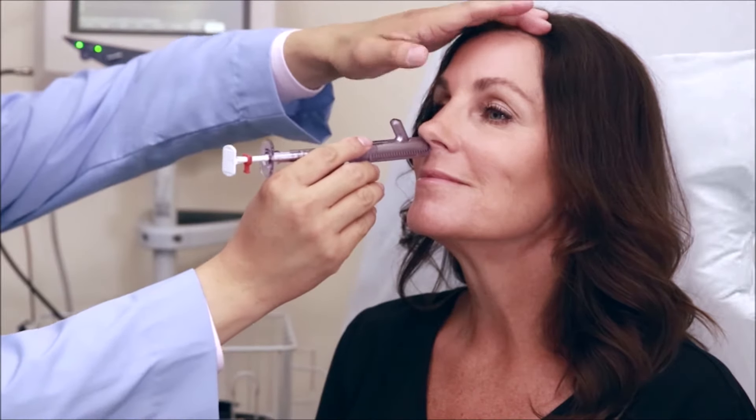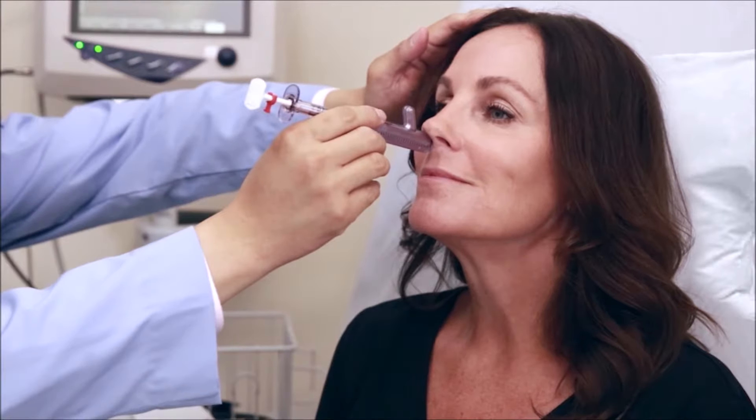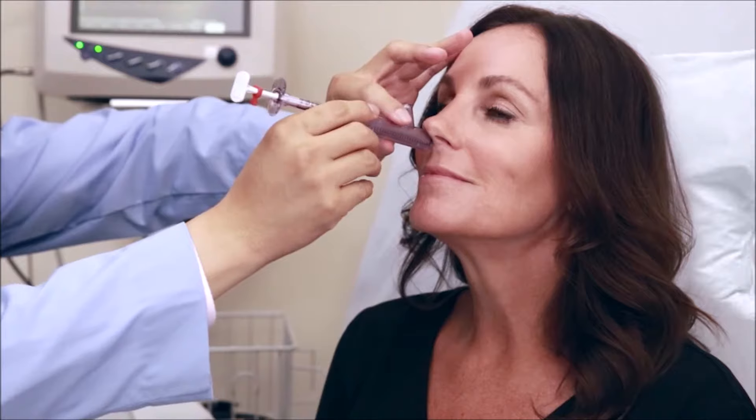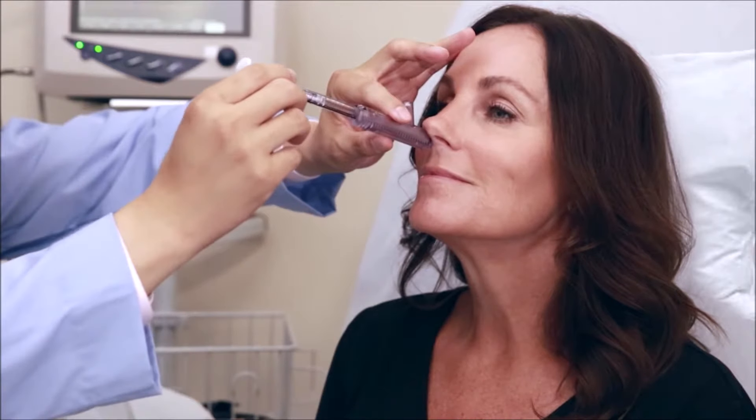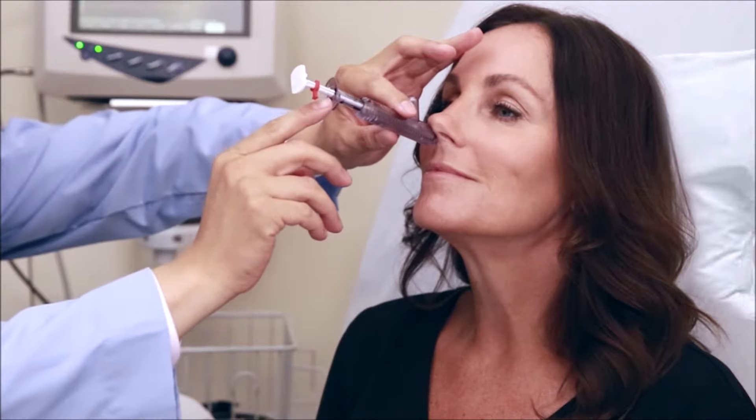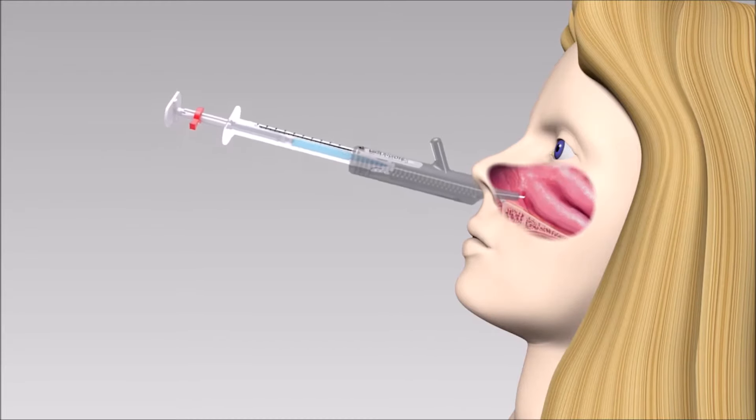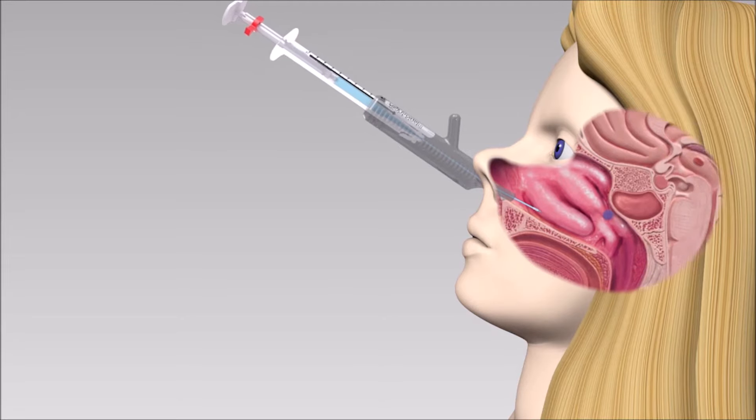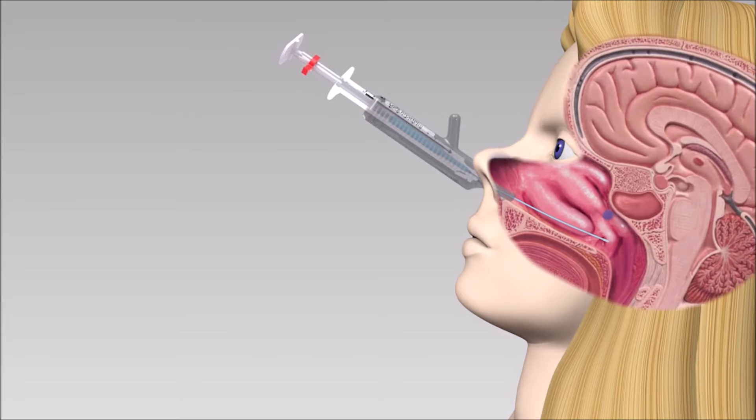The next step is to hold TX360 in this position with your non-dominant hand and hold the syringe with your dominant hand. Then gently push the entire syringe into the body of TX360 as far as you can. The soft needle-like tip should glide on top of the floor of the nose.